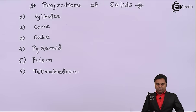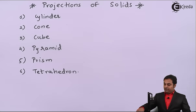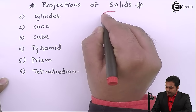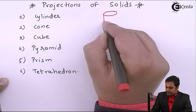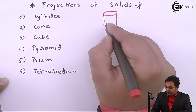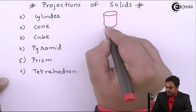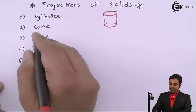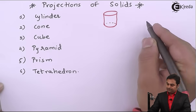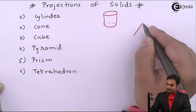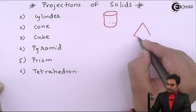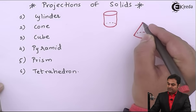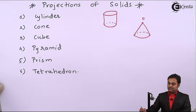When we talk about cylinder, it looks like this — having a circle at the top and even at the bottom, and having a height. This is a cylinder. Then there is a cone which has a circular base and an apex, which I will call the vertex or point.